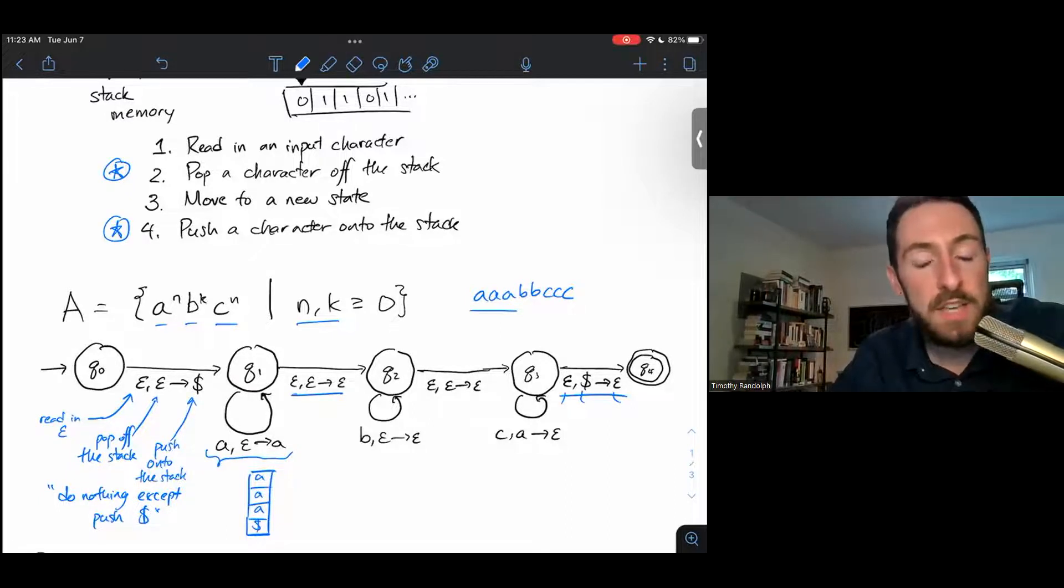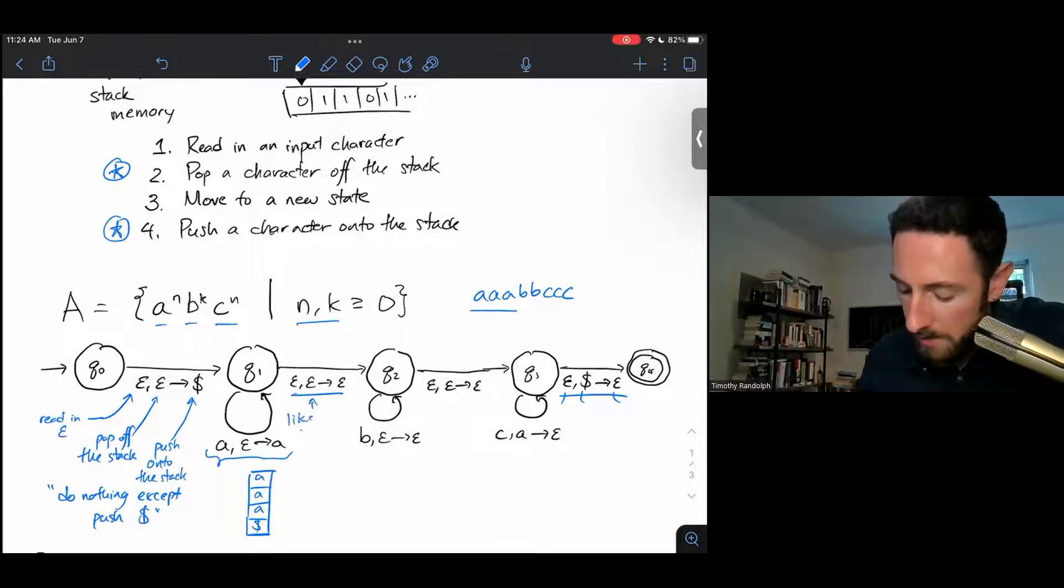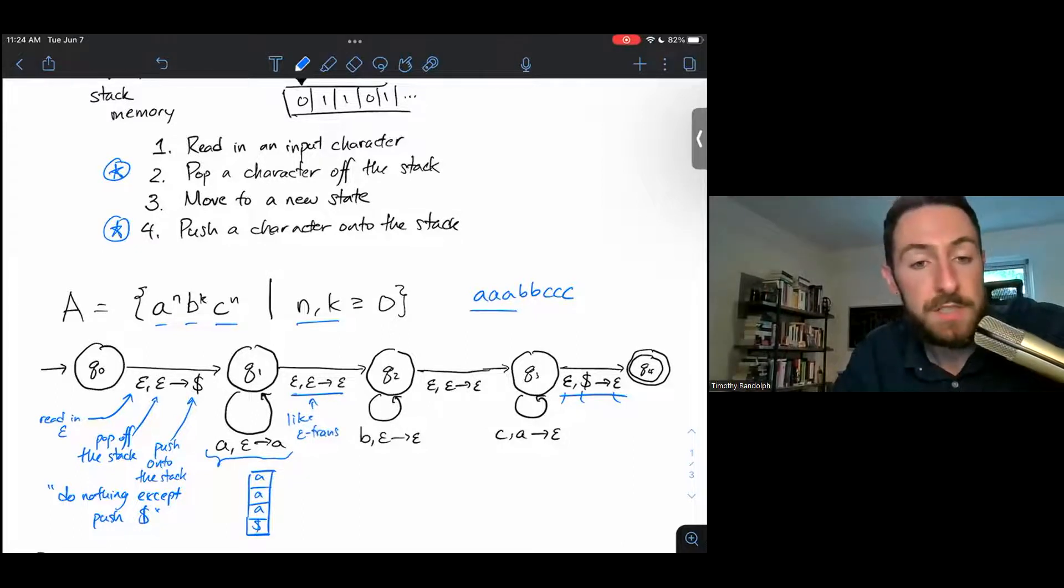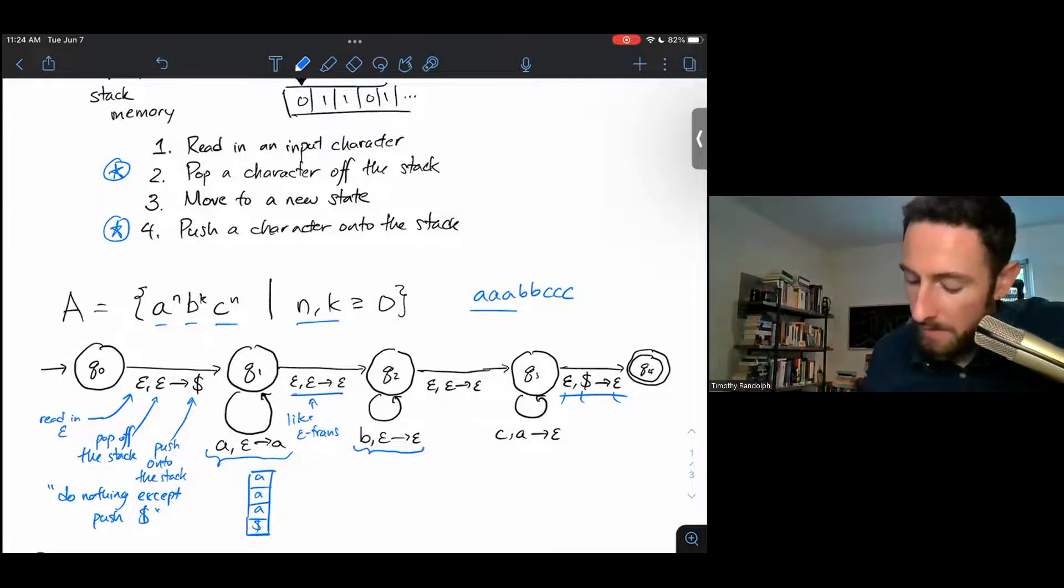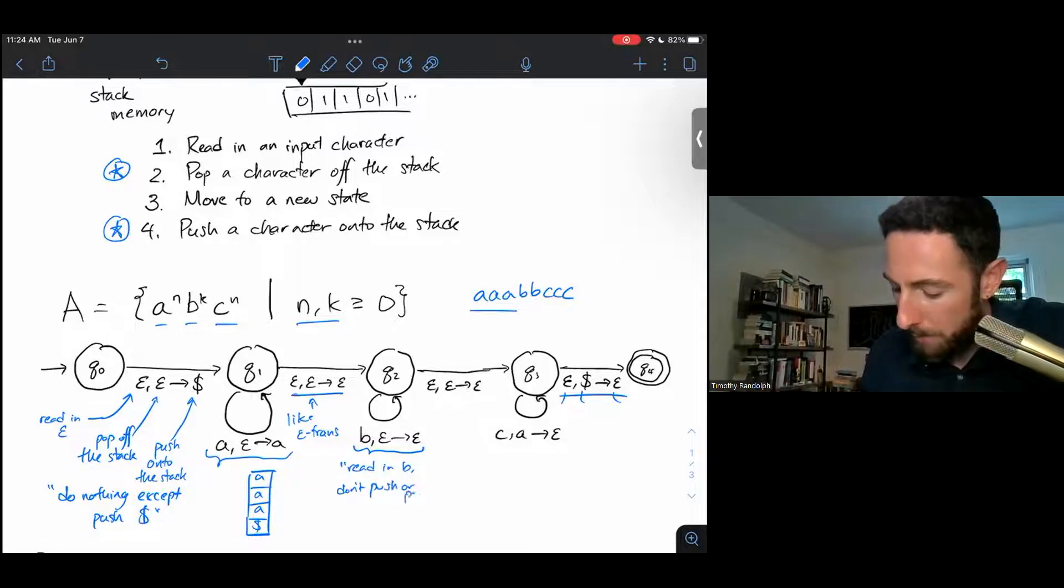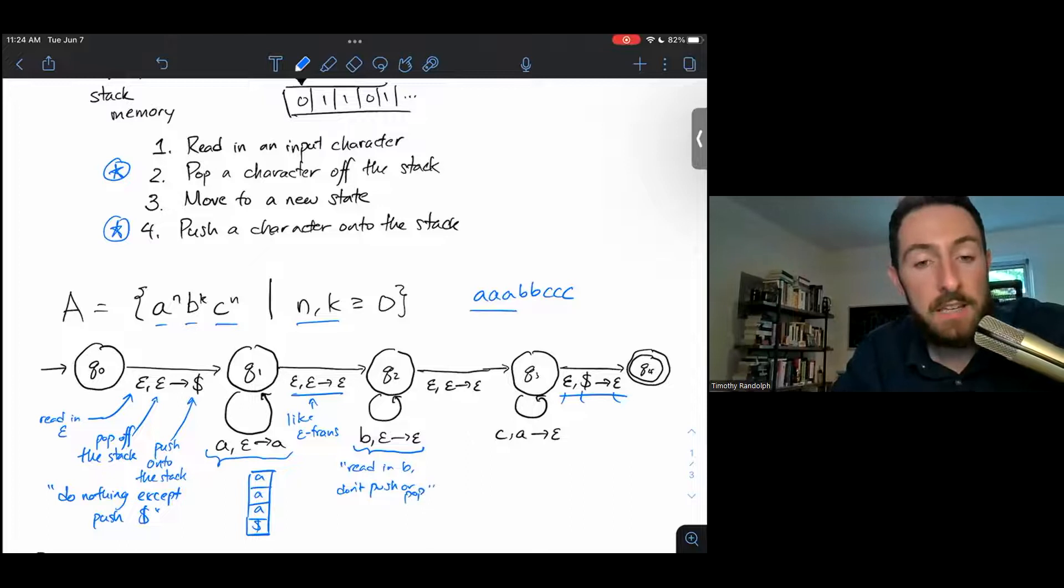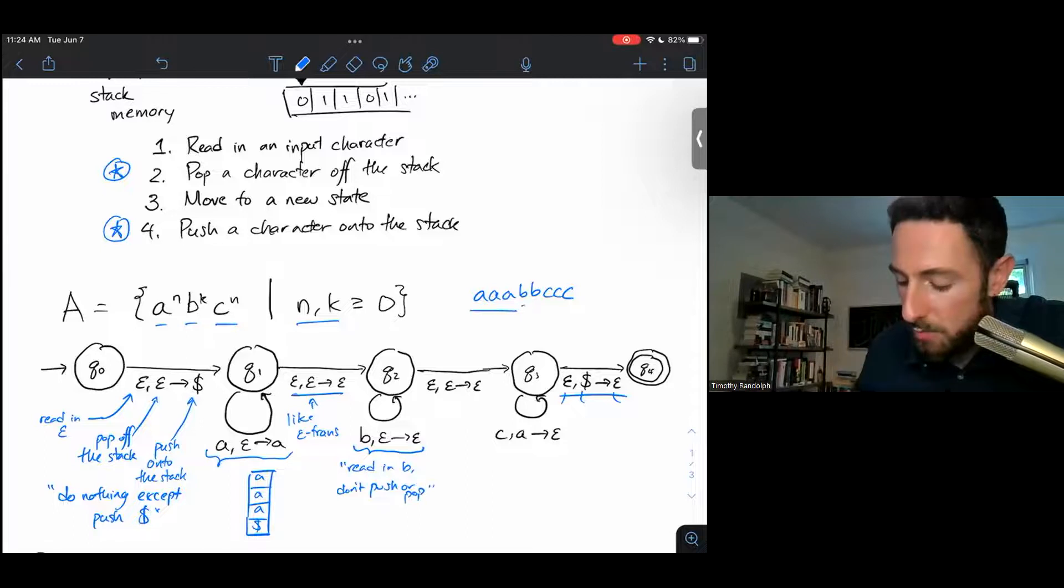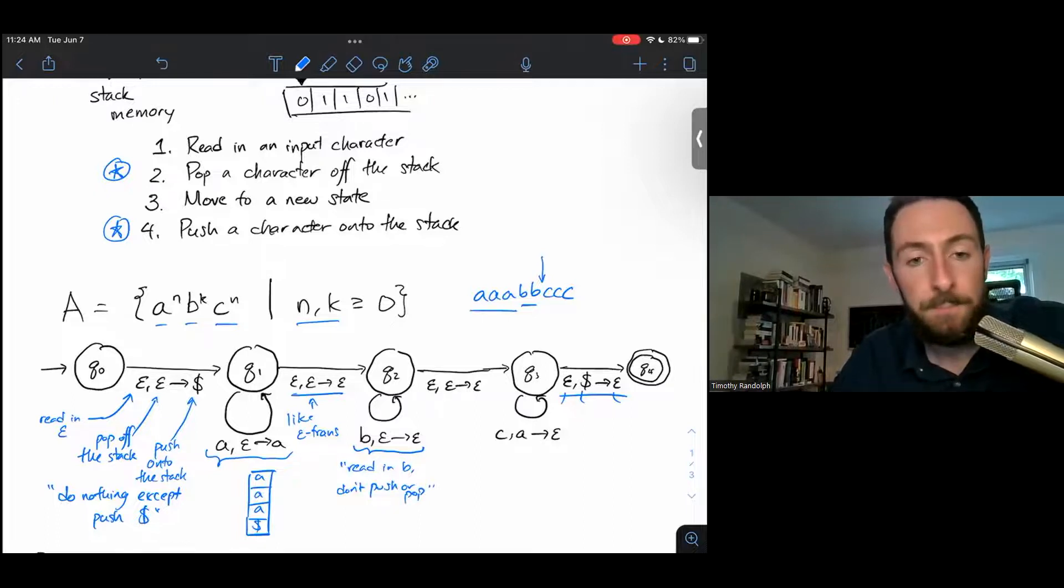So we'll consider the branch that then takes the epsilon transition. So this thing is just like an old fashioned epsilon transition in our NFA. It says read in no input character, pop nothing and push nothing. In other words, don't do anything. Just split and have one branch go to Q2 while the other branch stays behind. This particular transition from Q2 tells us read in B, don't push or pop. So we take this transition and it will not change our stack because we don't push or pop anything, but it'll let us read in these two B's and just sort of move past them. So at this point in our execution, we have read in A, A, A, B, B. Our stack contains three A's on top of a dollar sign. And we are moving on.